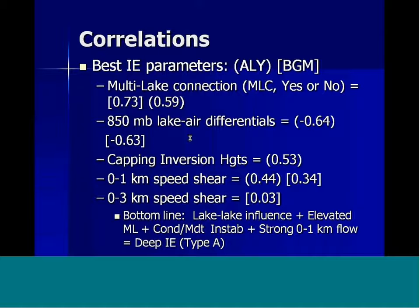Interestingly, fairly low negative correlations came out for the differential between the 850-millibar temperature and the water temperature. These strongly negative correlations seem to imply that as opposed to events with extreme instability, it's the events more in the conditional or moderate range — based on Izziel's processes originally documented in the late 80s — that were better for promoting inland extent. Capping inversion heights showed a fairly significant positive correlation, where a deeper mixed layer seemed to promote greater inland extent, presumably providing access to greater moisture depth.